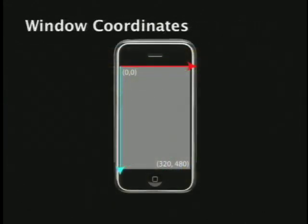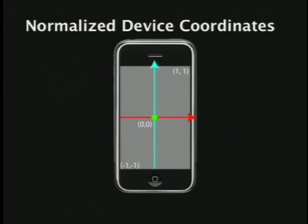On the outermost layer we have window coordinates — the device-based pixel coordinates. When you get touch events on the iPhone, these are in window coordinates: the top left corner is 0,0, and as you move down to the right you go up to the full resolution of 320 by 240. OpenGL is more concerned with normalized device coordinates — the screen is a unit square centered at the origin ranging from -1,-1 up to 1,1. Anything drawn outside that is off-screen.